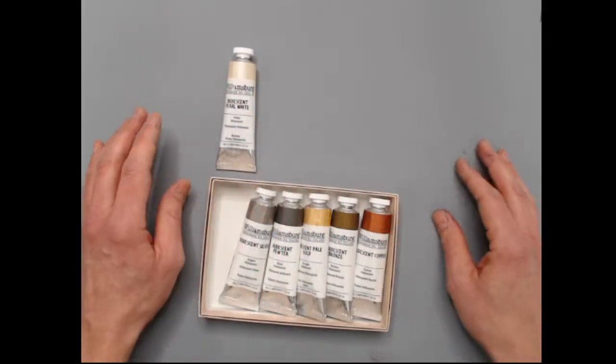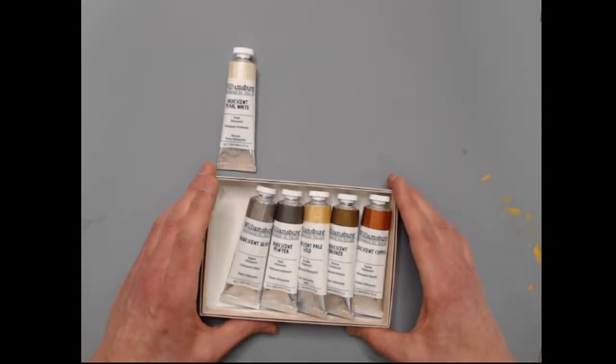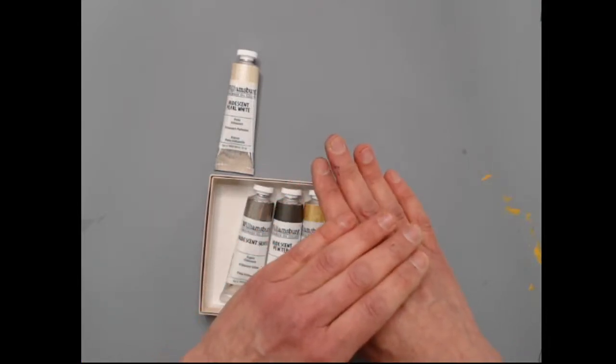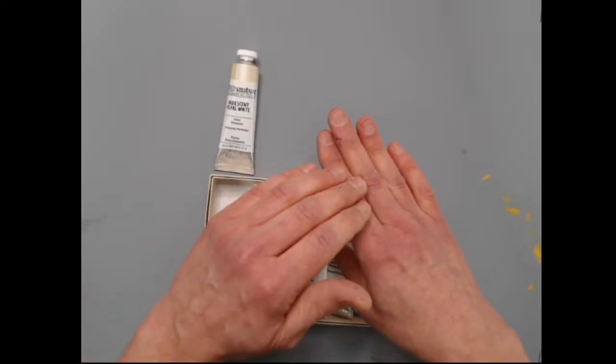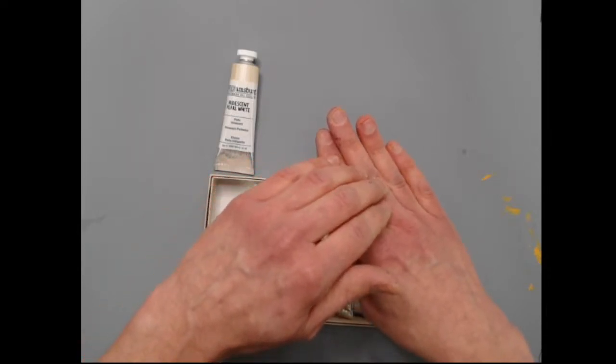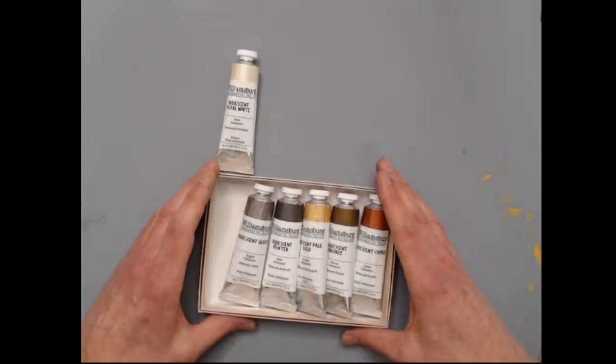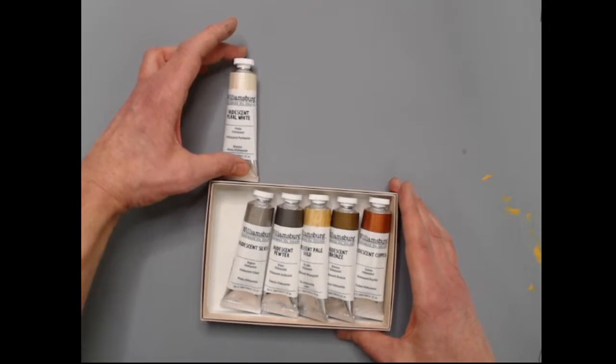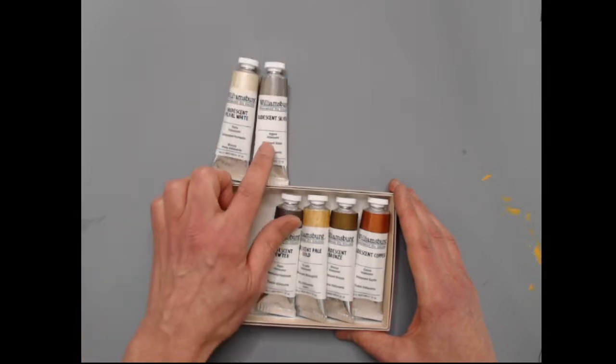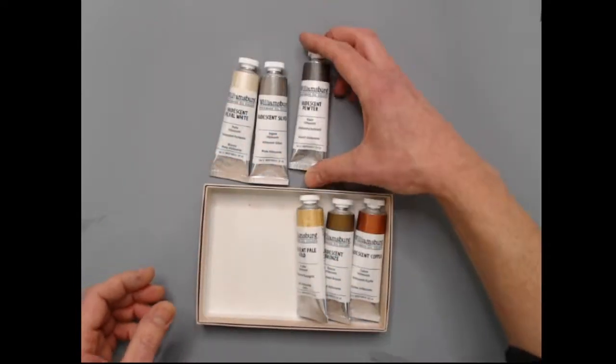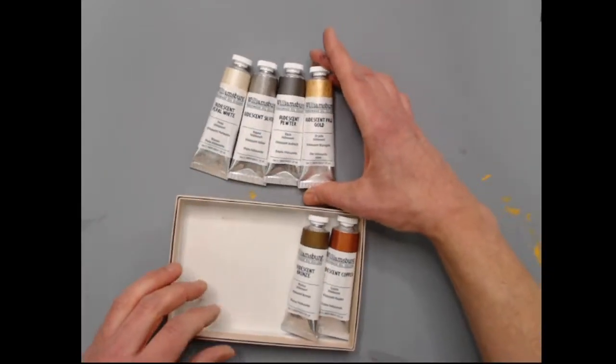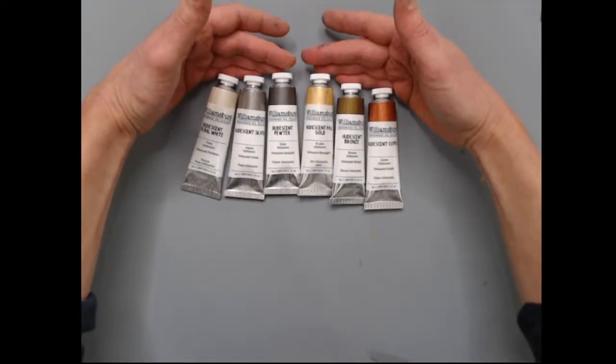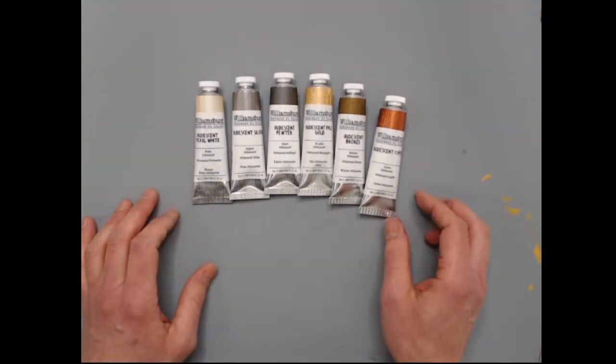These are all mica-based colors. Mica is that thin, beautiful, translucent natural mineral that you might see in a granite countertop. The light comes into that mica surface, bounces off through the coating, hits the mica surface, and bounces back up. Every time it goes through a layer, it's refracted in a way that creates a different type of color. The six colors are iridescent pearl white, iridescent silver, pewter, iridescent pale gold, iridescent bronze, and iridescent copper.